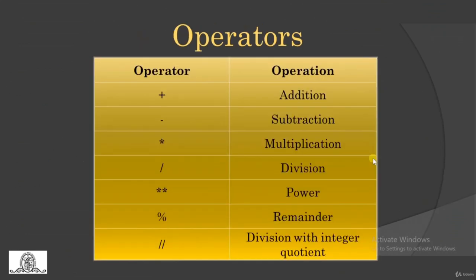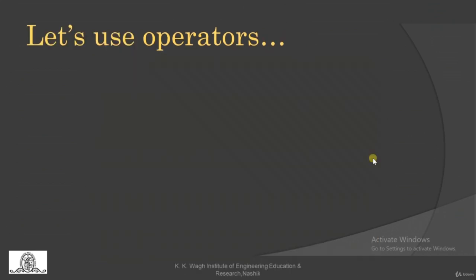Now let us see different operators we can use on variables. Plus is for addition, minus for subtraction, asterisk for multiplication, division can also be done, double asterisk is for power, percent sign is for remainder — the division is performed and the remainder value is stored — and double slash is for integer quotient division.